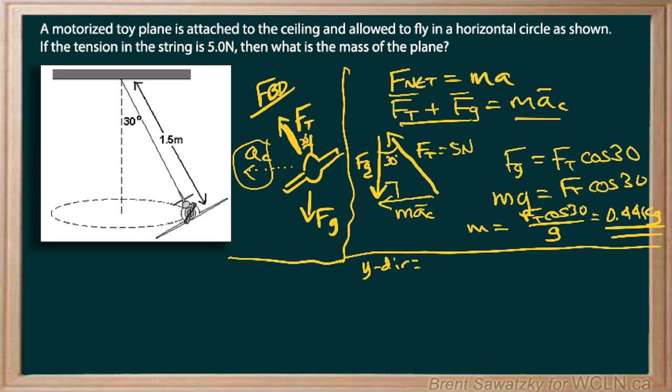Y direction again F net equals ma and we're strictly looking in the y direction. In this case the y components, and vertically it's not accelerating, remember our acceleration we showed it right here is in a horizontal direction to the left in the way that we drew it here.